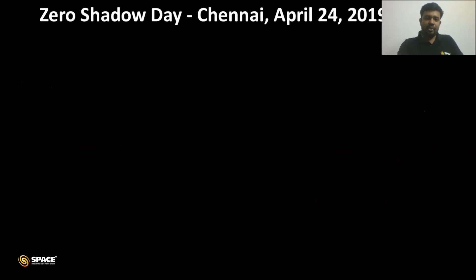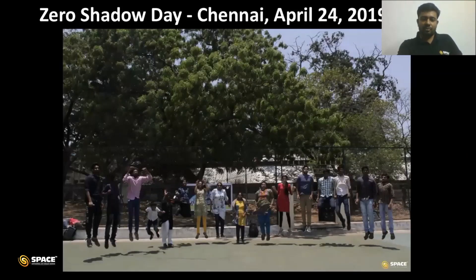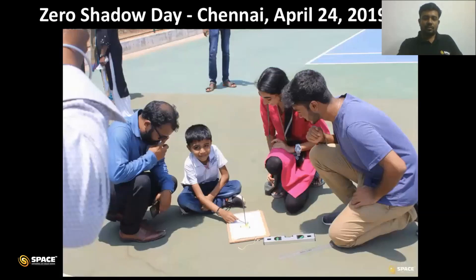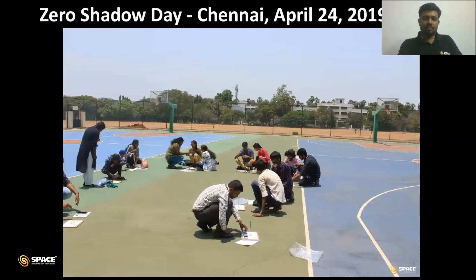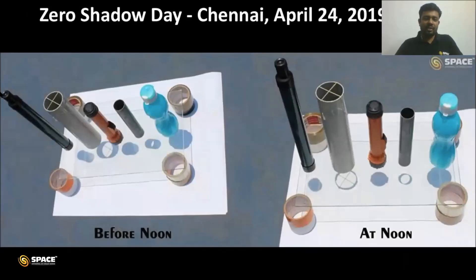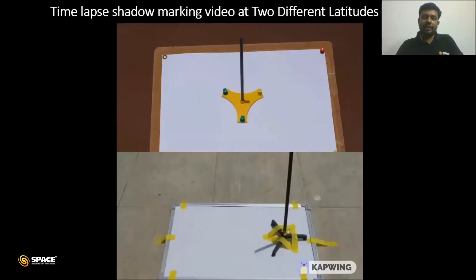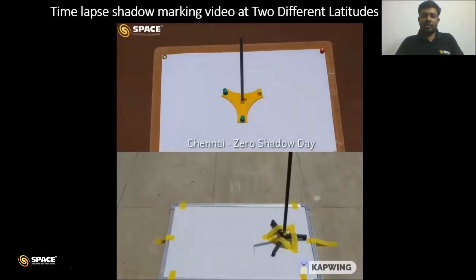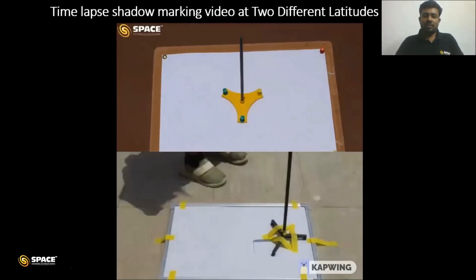In 2019, we celebrated Zero Shadow Day. Here are some photographs. You can see a comparison: the picture on the left was taken before noon and the picture on the right was taken exactly at local noon time. You can also use a transparent table. Here is a time-lapse video at two different latitudes on the earth — you can see the motion of the shadow. Exactly at noon time, the shadow disappears in the video above, but not in the one below.